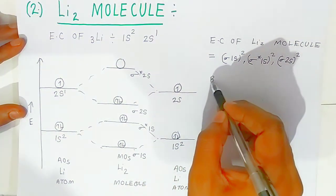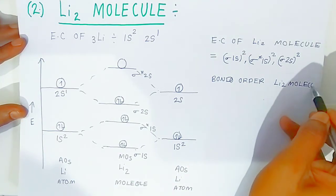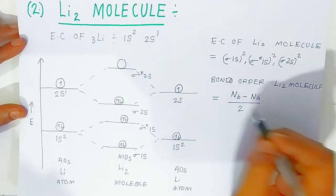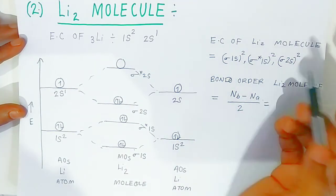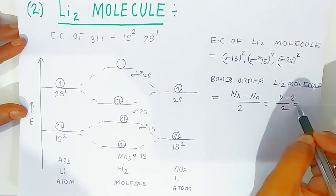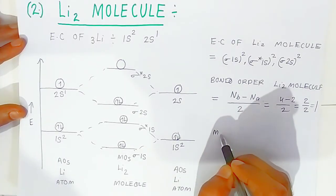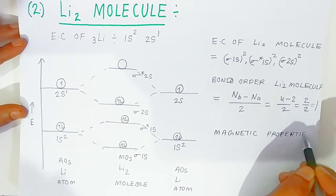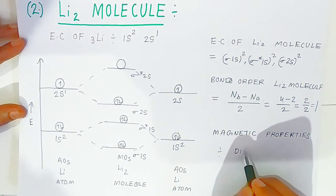For the bond order of lithium molecule: the formula is (bonding electrons − antibonding electrons) / 2. Bonding electrons = 4 (σ1s² and σ2s²), antibonding electrons = 2 (σ*1s²). Bond order = (4 − 2) / 2 = 1. So lithium forms a single bond. For magnetic property: there are no unpaired electrons, so all electrons are paired, and Li₂ is diamagnetic in nature.